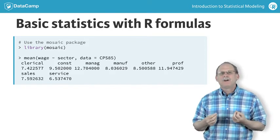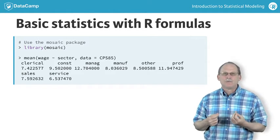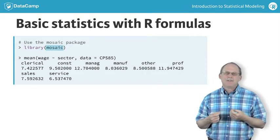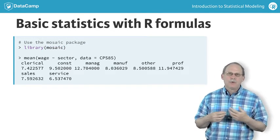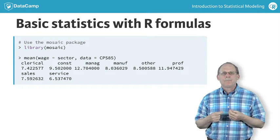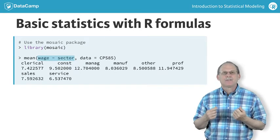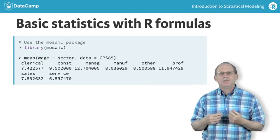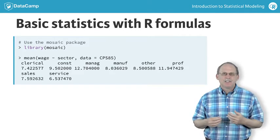The mean function is one of the first functions newcomers to R encounter, but it isn't set up to use formulas. The mosaic package upgrades mean and other functions so that they work with formulas while continuing to work in the original way. The formula wage tilde sector means to break down the wage by sector. Using that formula in the mean function gives the average wage in each sector.